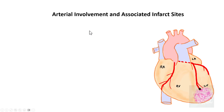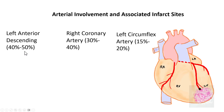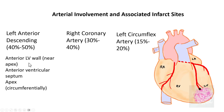Let us look into the arterial involvement and the associated infarct sites. 40 to 50 percent of cases are due to left anterior descending artery obstruction, 30 to 40 percent are due to right coronary artery obstruction, and the remaining are due to obstruction of the left circumflex arteries. When there is obstruction in the left anterior descending artery, the infarct will be seen in the anterior left ventricular wall, usually at the apex, and it also involves the anterior ventricular septum and the apex circumferentially.